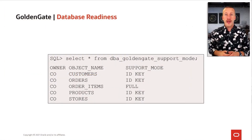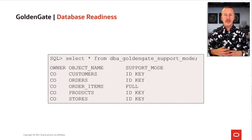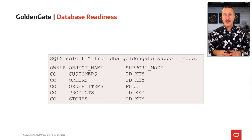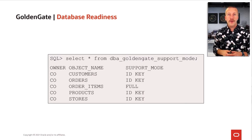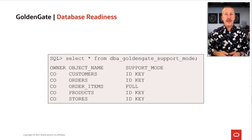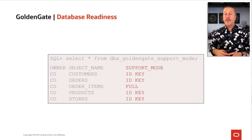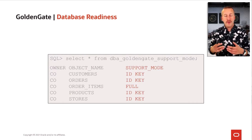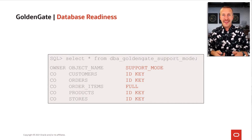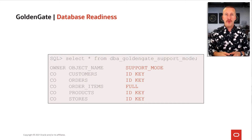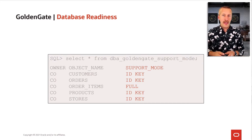The very first place to look is the view DBA_GOLDENGATE_SUPPORT_MODE. It has a list of all the objects in the database that can be replicated with Golden Gate. There is also a column called Support Mode, which has detailed information about the support level you can get from Golden Gate on that specific object. In this example, it can be Full or IDKey — but what does that actually mean?